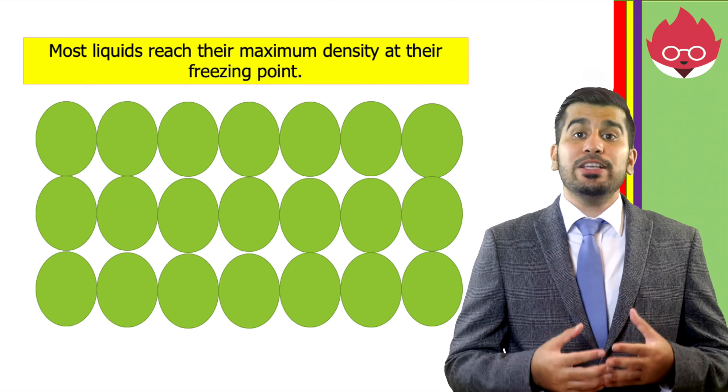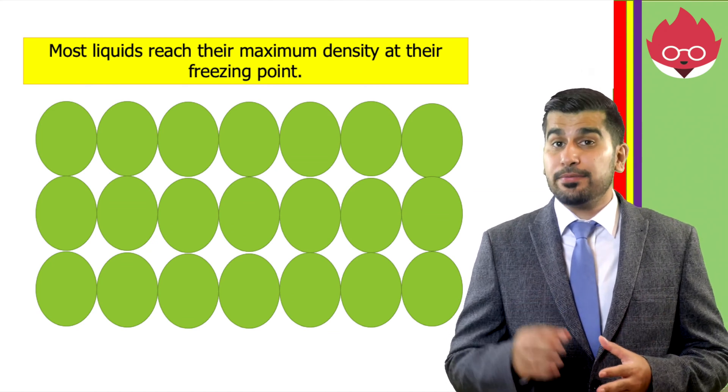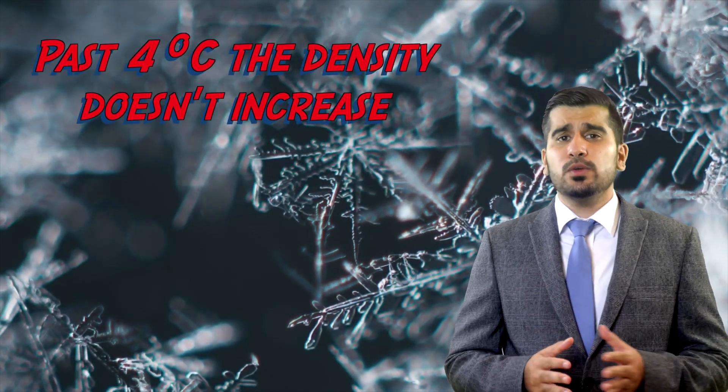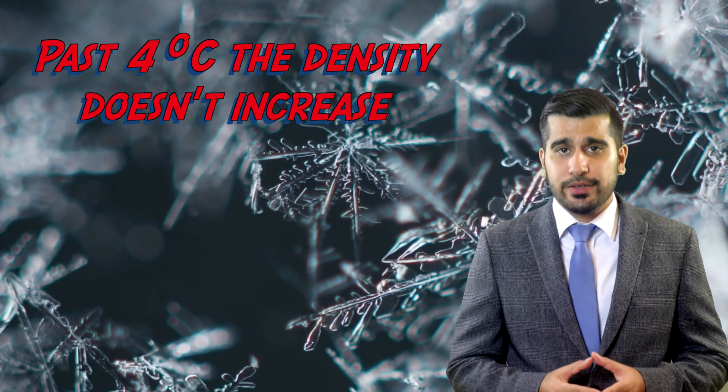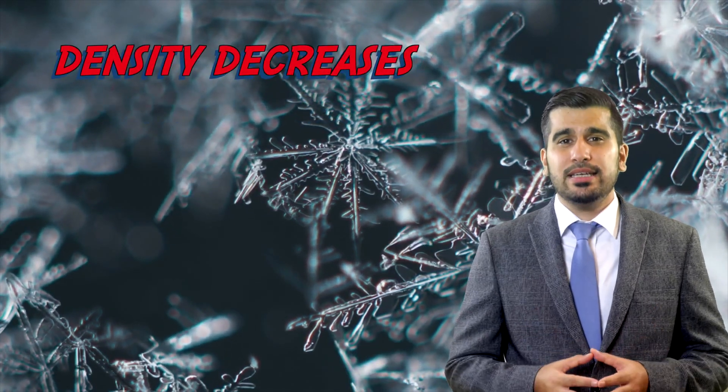For many liquids, they reach their maximum density at their freezing point. However, as water changes state from a liquid to a solid, its density does initially increase, but it will reach its maximum density at 4 degrees Celsius. Making it unusual as this temperature is above its freezing temperature at 0 degrees Celsius. Past 4 degrees Celsius, density doesn't actually continue to increase, but will start decreasing.